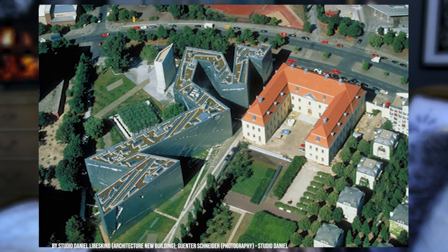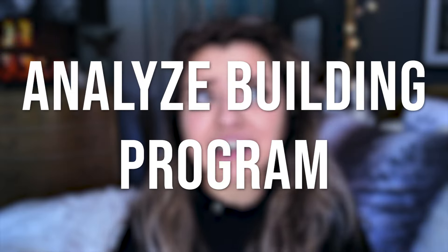Going back to Libeskind's work, he abstracted the Star of David, which gives the building outline a very zigzag look, resulting in a zigzag promenade people can interact with. Interstitial spaces in architecture are always a great technique to elicit emotion from occupants, so I highly recommend incorporating them into your architectural expression. Next, analyze the building program — the site and the program always have to be interrelated. Understand the relationship between public and private programs and how different occupants interact with those spaces.